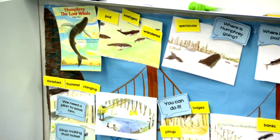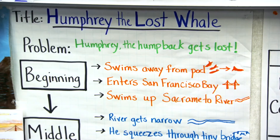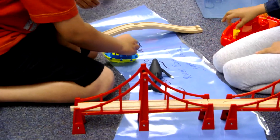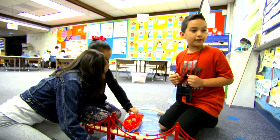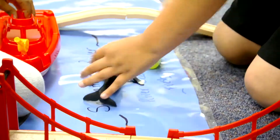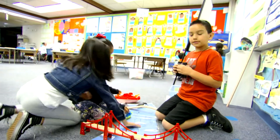Students in a thematic unit are involved in literature in multiple ways, but there's always one book selected for the narrative — it's read out loud, orally presented, and students engage in retelling the story. In this case it's a story about a whale in an ecosystem, the San Francisco Bay. Humphrey swims away from his pod and enters the San Francisco Bay. He swims up the Sacramento River and the river gets narrower and more narrow. He squeezes through the tiny bridge. The Coast Guard and scientists make a plan. Narrative recall is one of the Daily Five activities in this classroom.